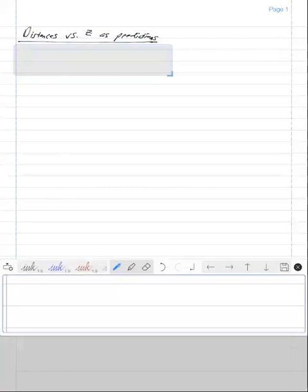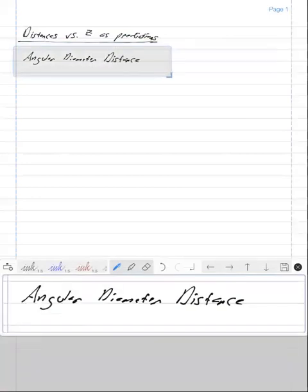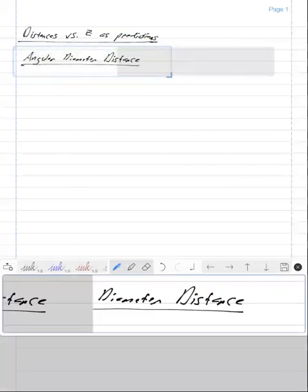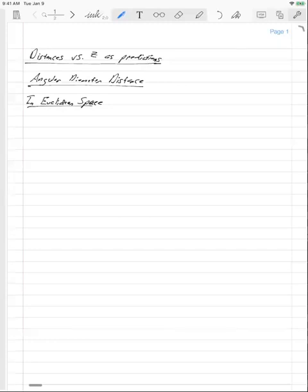And the first one is going to be the angular diameter distance. So let's start off in Euclidean space. You know the relationship between distance and angle, but I'm just going to go through it here. So you have some object far away and it has a proper size s.